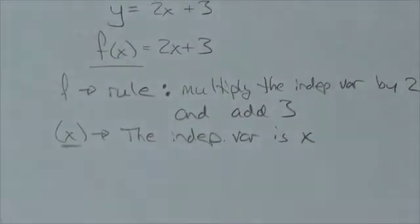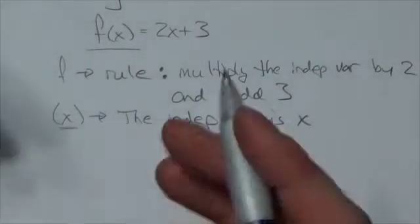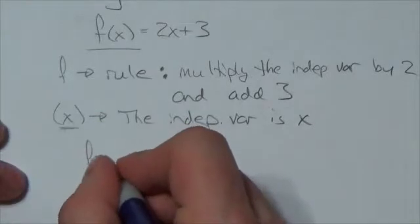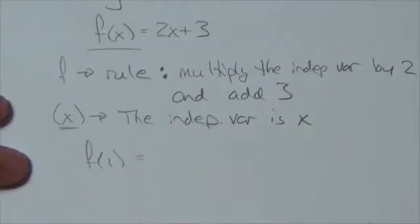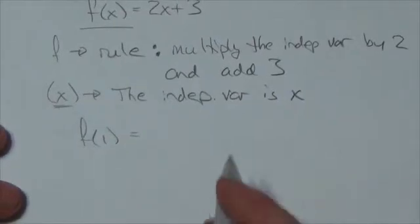And the reason why this is very useful here, because now if I plug in 1 here, f still stands for the same rule. Multiply the independent variable by 2 and add 3.